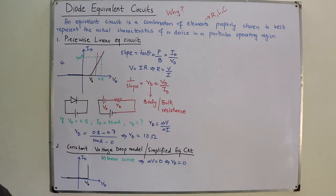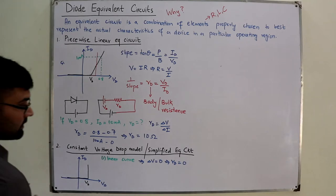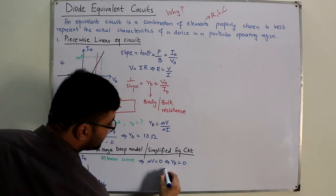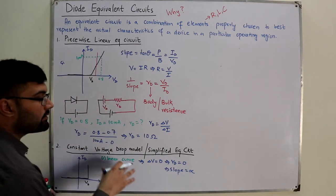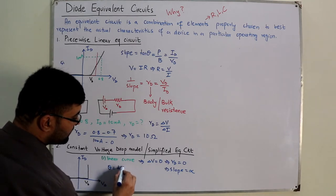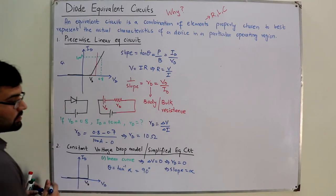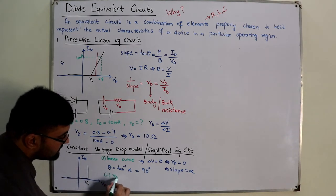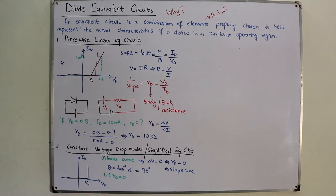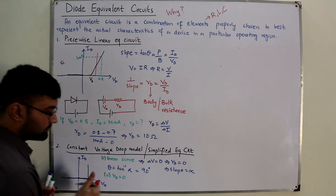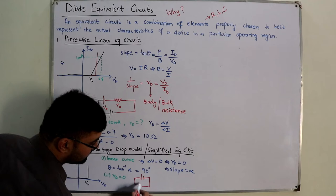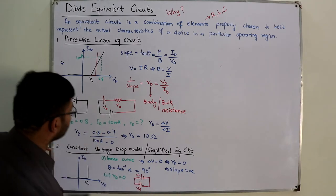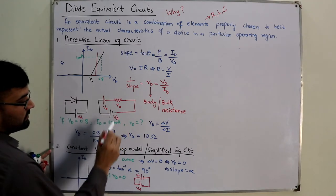1 over slope is 0, so the slope is infinite, which means theta = tan⁻¹(∞) = 90 degrees. So the assumptions are: first, linear curve; second, Rd = 0. Which means if you have a diode in the circuit, you replace it only by the barrier potential Vb. This is the voltage across the diode — this is the barrier potential.